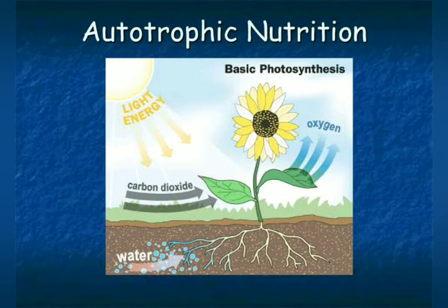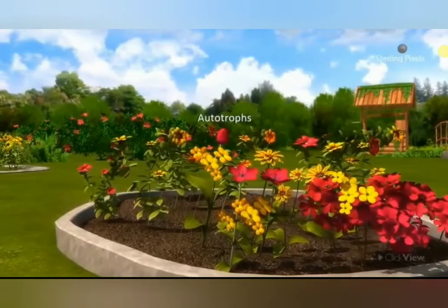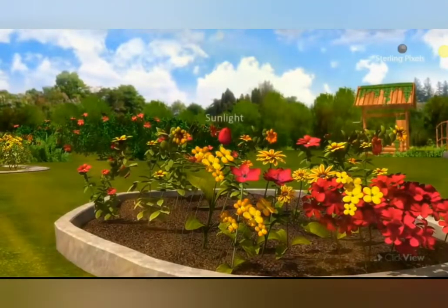Now coming in detail to autotrophic nutrition — we know that the leaves are called the food factories because food is prepared in the leaves by the process of photosynthesis. As the plants prepare their own food, plants are also known as producers. In autotrophic nutrition, the plant prepares food known as carbohydrates; carbohydrates are prepared in the leaves. The roots absorb water and carbon dioxide is absorbed by the leaves.